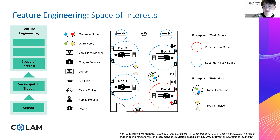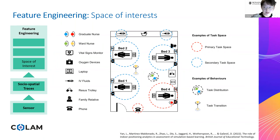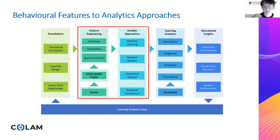Behavioral features can also be extracted from students' and teachers' interactions with different resources or parts of the learning space. We use insights from learning design and stakeholder input to segment the learning space into different spaces of interest and extract behavioral features based on the meaning of each space. For example, this figure illustrates how we separated a clinical classroom into different task spaces based on learning objectives. The teachers also helped us determine the reasonable effective radius of each space of interest.